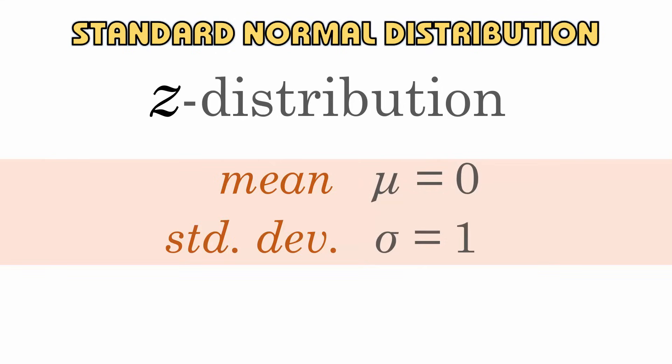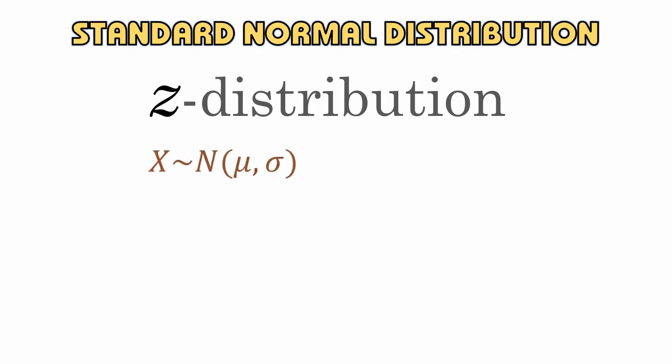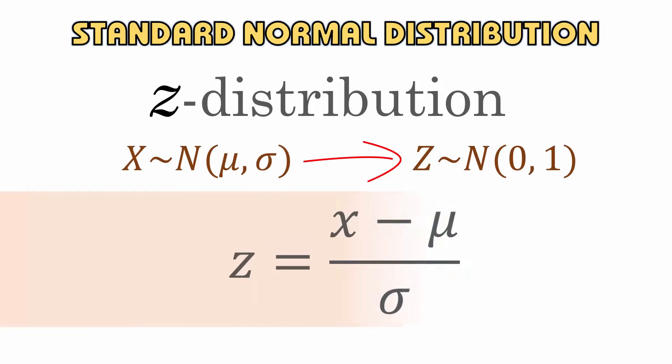The formula for transforming a score, or observation x, from any normal distribution to the standard normal score is z equals x minus mu over sigma.